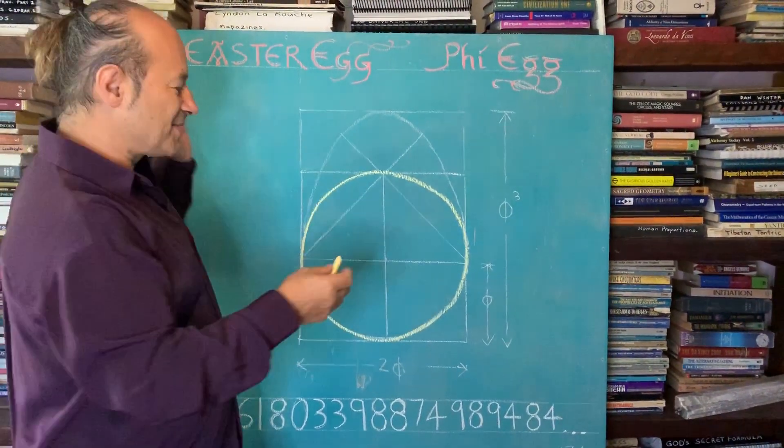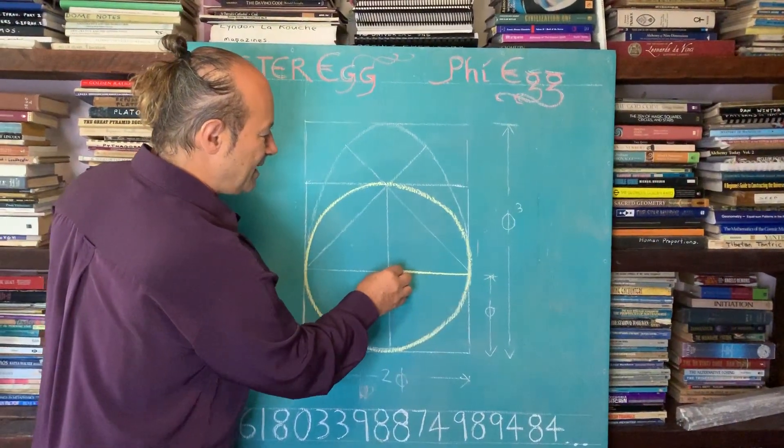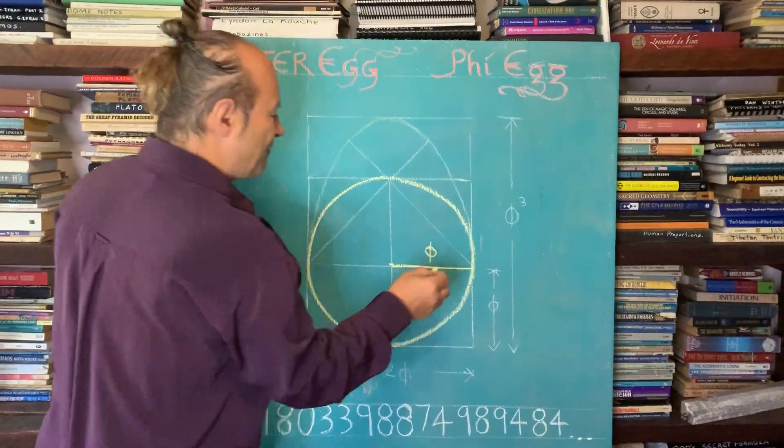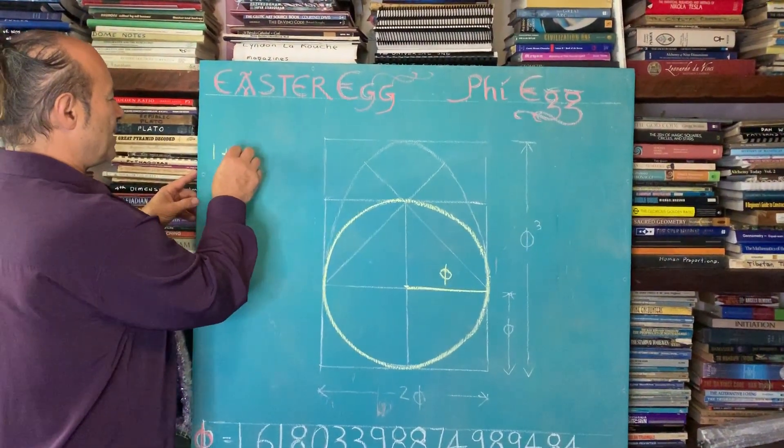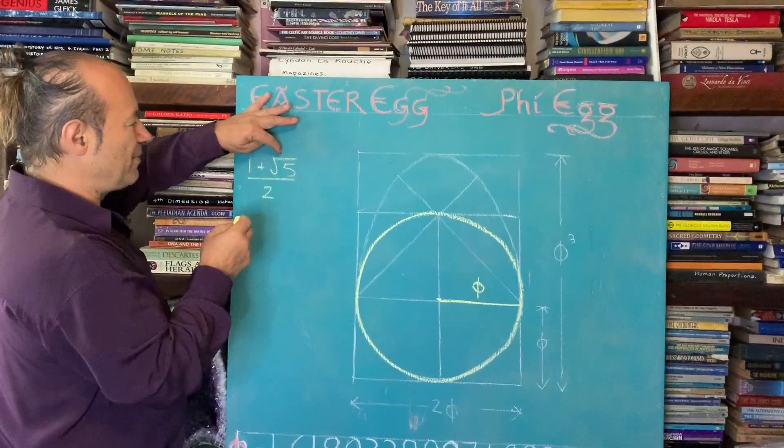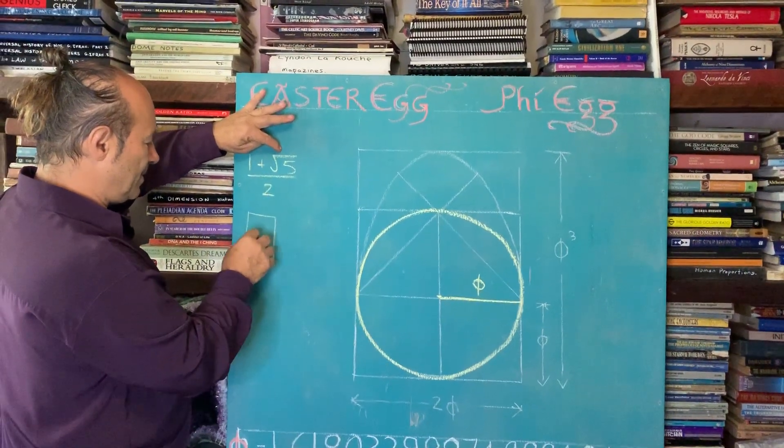The measurement of the circle, here's our center. If we allow the radius of the circle here to be Phi, so Phi has a value, it's based from the formula 1 plus the square root of 5 divided by 2. And we know that root 5 comes from the double square.